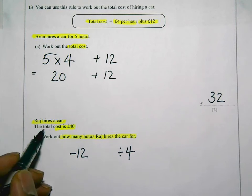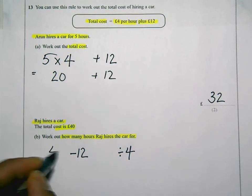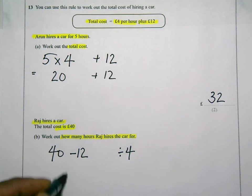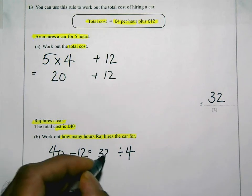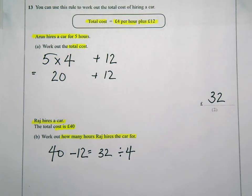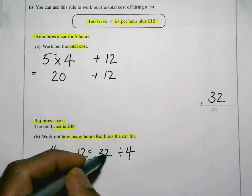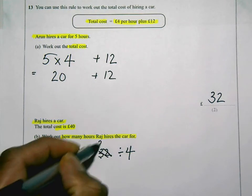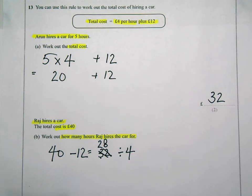So forty take away twelve, that's going to be... forty take away twelve is... twenty-eight. Twenty-eight, be careful. And then twenty-eight divided by four...